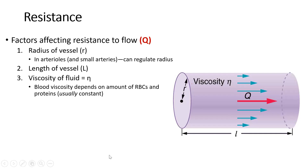The third factor is the viscosity of the fluid — in our case, the viscosity of our blood — represented by the Greek symbol eta. Blood viscosity depends mainly on the number of red blood cells and protein present in our blood. This is usually constant, but it becomes a factor in conditions like anemia, where we have fewer red blood cells and easier blood flow, which can lead to bleeding disorders. At the opposite end of the spectrum, polycythemia — a condition with too many red blood cells — clogs the vessels, makes blood very viscous and thick, and creates significant impedance to flow.